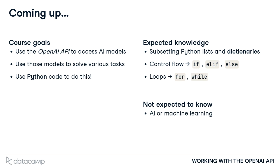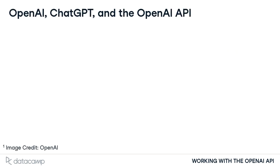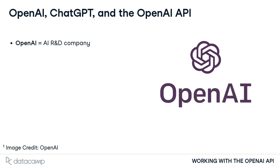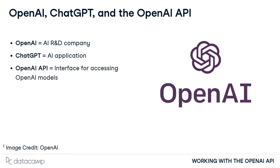With that, let's dive right in. OpenAI is a company that researches and develops artificial intelligence systems. One of their most famous developments is ChatGPT, which is an application that allows users to communicate with an AI-powered chatbot to ask questions, perform tasks, or generate content. The OpenAI API allows individuals or organizations to access and customize any of the models developed and released by OpenAI.